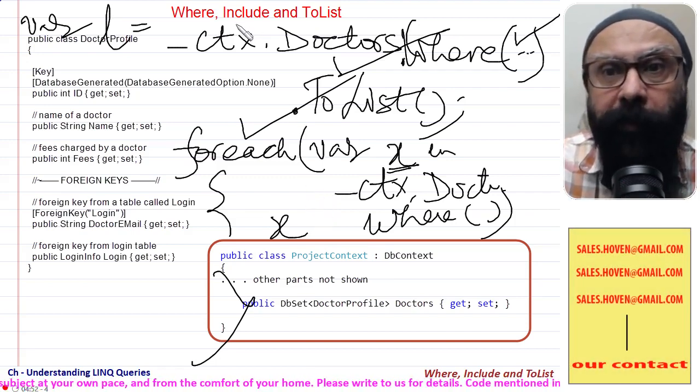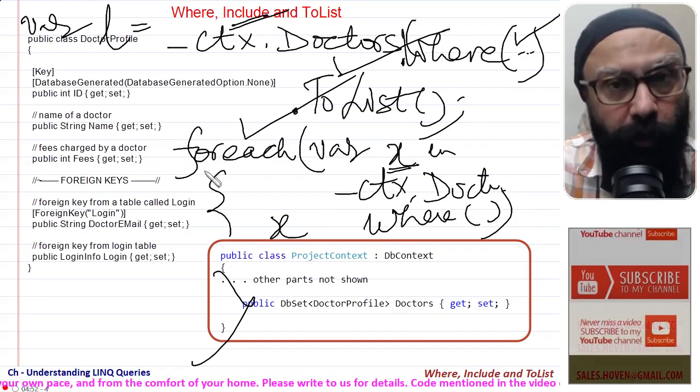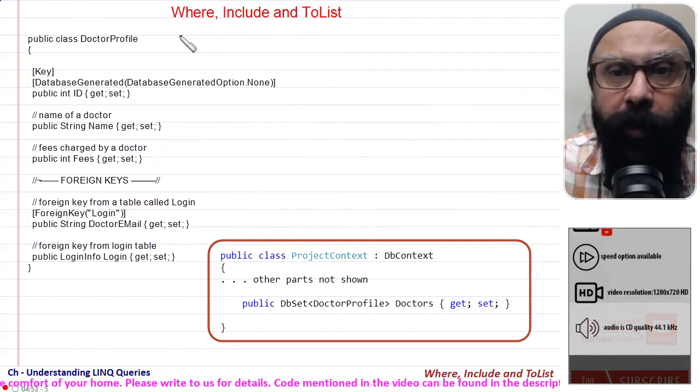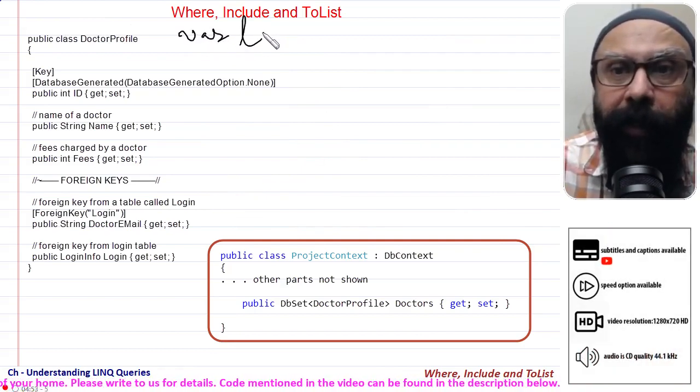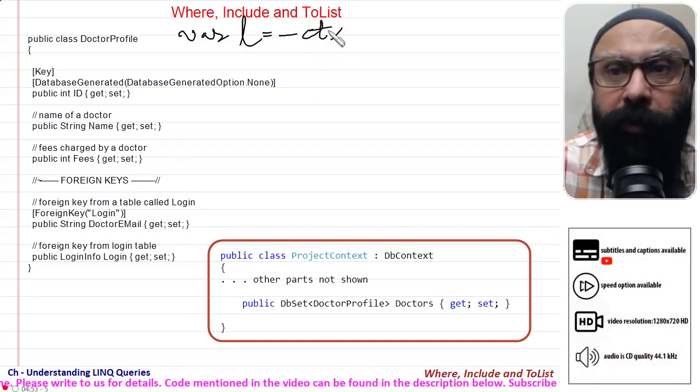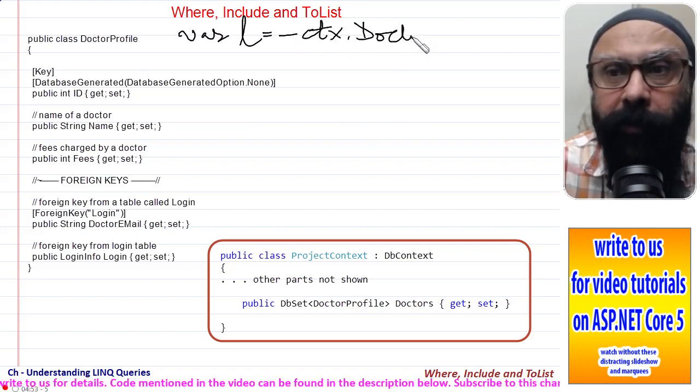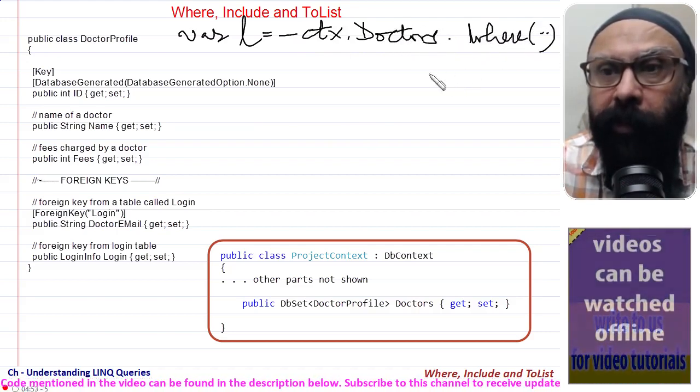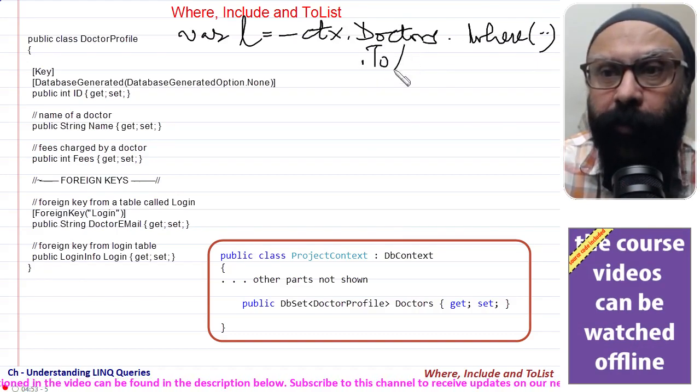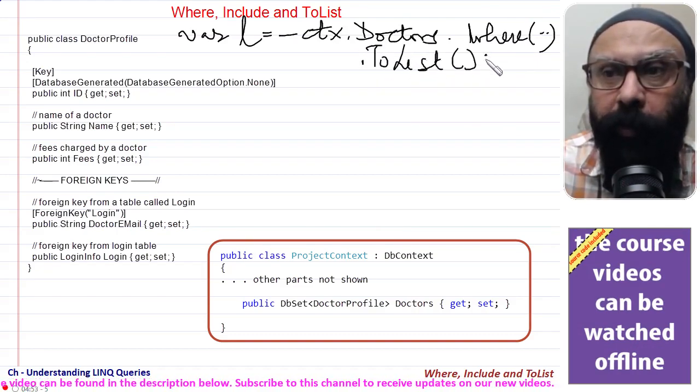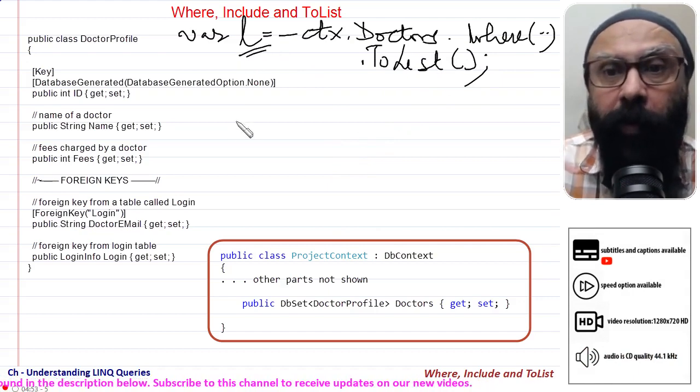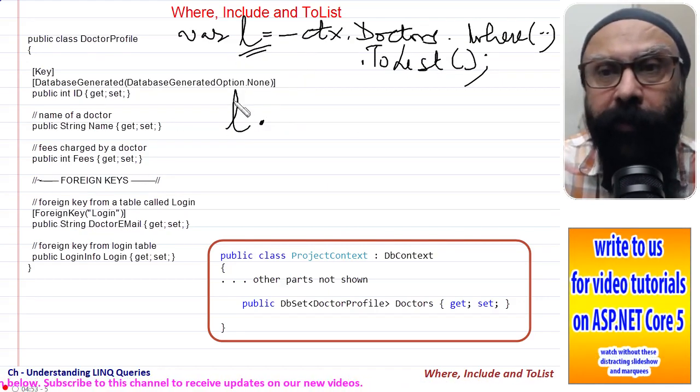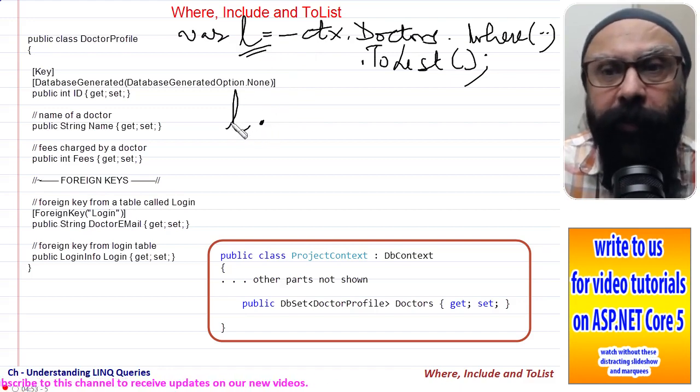And now there is another thing that you must have seen here, that I have written Include. Now let me again write this code a bit in small. Where_l is equal to underscore ctx dot Doctors dot Where this condition, and let me also say that I have written dot ToList also. This means now on this l, this particular sequence, this is my list.